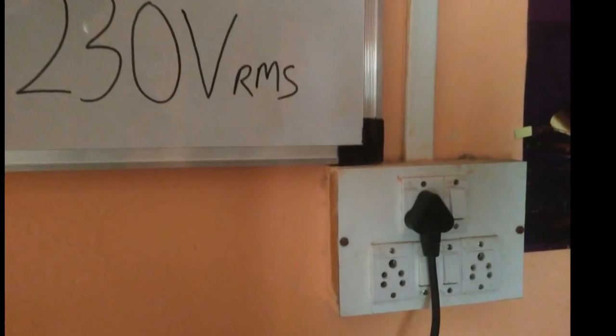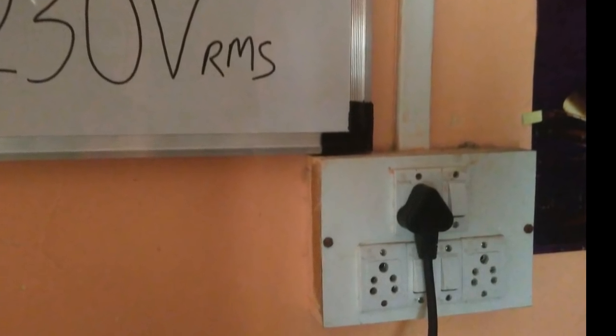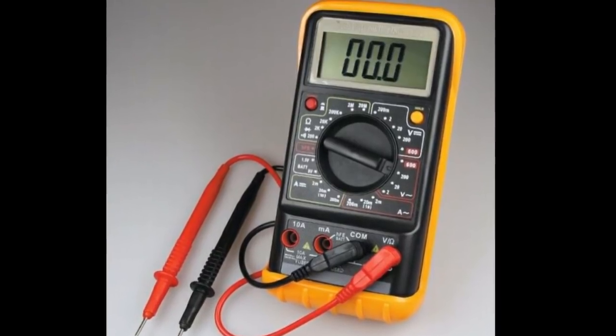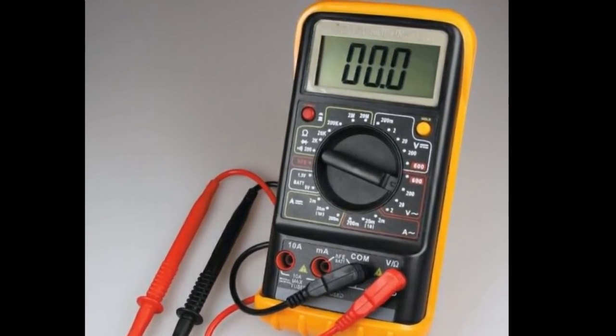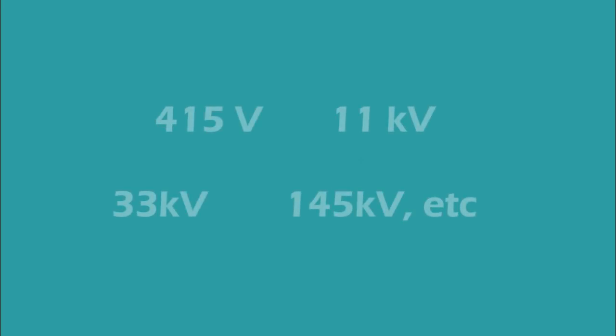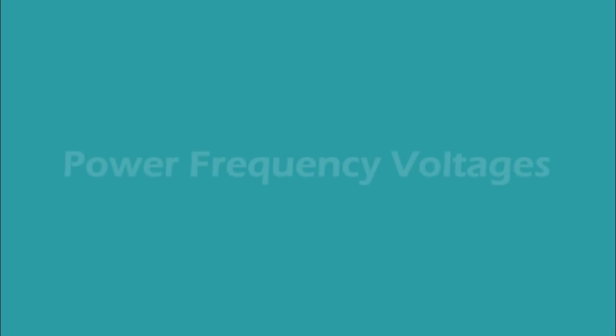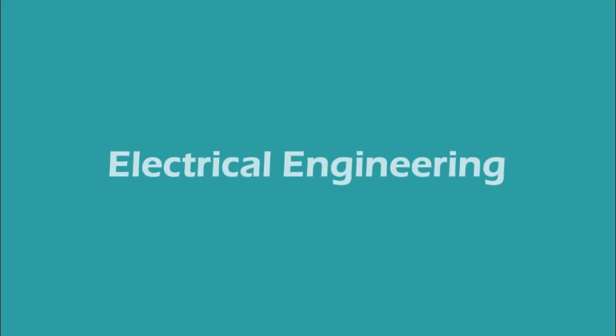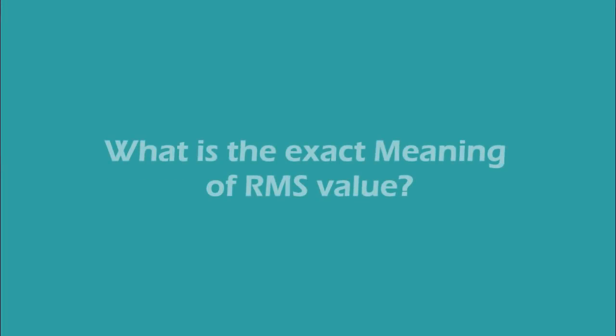The voltage we receive in our home is also an RMS value. The measurement of AC quantities given by multimeters is also an RMS value. The system voltages are also RMS values. Even the values of power frequencies withstand voltages given by IEC standard are also RMS values. The RMS value is an important term in electrical engineering. But what is the exact meaning of RMS value and why is it so much important?